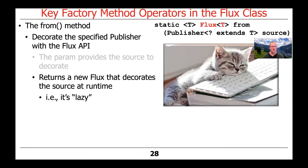Keep this in mind when we get further along and start talking about the subscribeOn method, because that will have an impact in terms of when these things can run in the background. The eager operations will always run in the assembly thread — the creation thread where the Flux is created. Whereas the from operator, which is lazy, can be put in a background thread and run there.